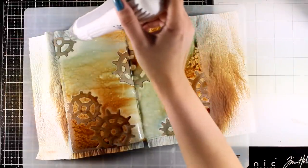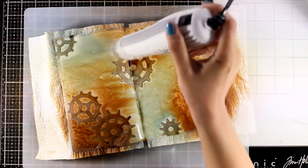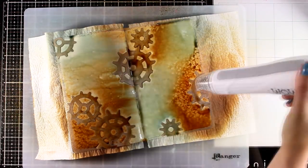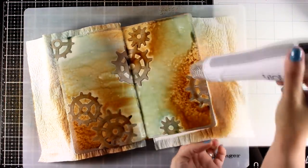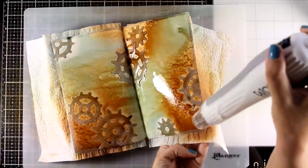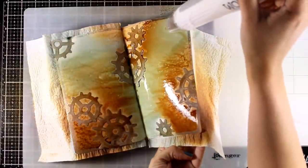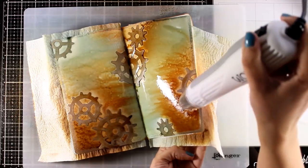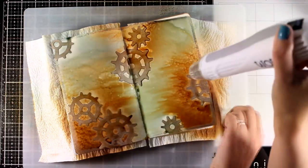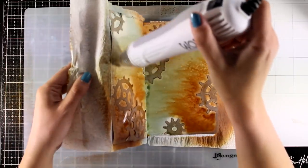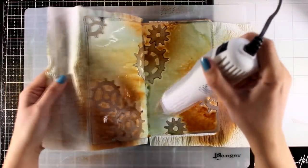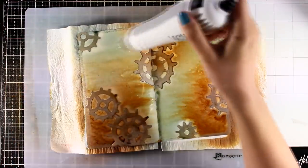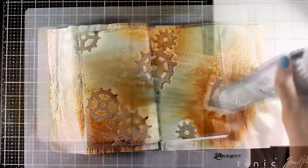So I'm using my heat gun to make sure that everything is nice and dry. And since I have a lot of water on top of my page, I'm going to help that move even more by lifting the pages. By sticking down the gears beforehand, I do have some texture and interest on my background. And by just using two colors, I ended up having an instant background that I think is just gorgeous.